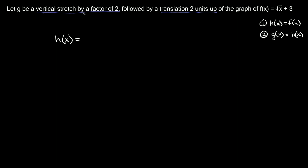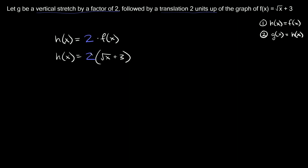In order to vertically stretch a function, you have to multiply the function by that factor. So here we would say two times f of x. Whenever you vertically stretch or shrink something, you just multiply the function by that number — you put it in front. So h of x is equal to two times f of x, which is the square root of x plus three, so two times the square root of x plus three. Distributing the two: h of x equals two times the square root of x plus six.